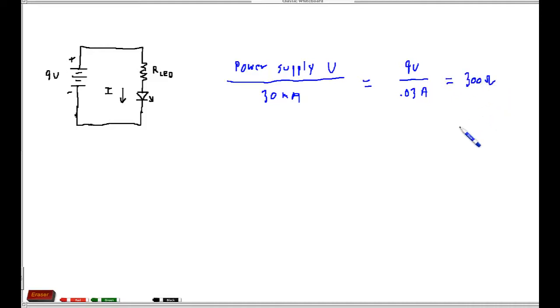Now this is a safe value, the lowest value you'd want to have, but there's a couple of things that are working in your favor anyway. A lot of people will tell you to take your V applied, your V power supply minus V forward for the LED and divide that by whatever current you want from the LED. So if you wanted 30 milliamps you divide that by 0.03 amps and that would give you the value.